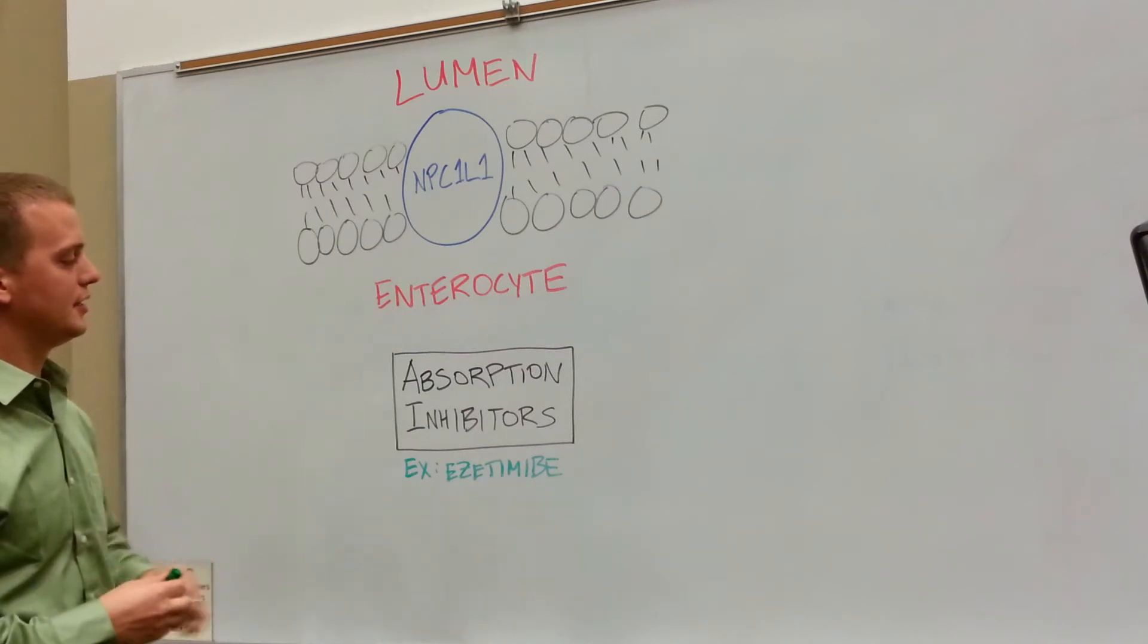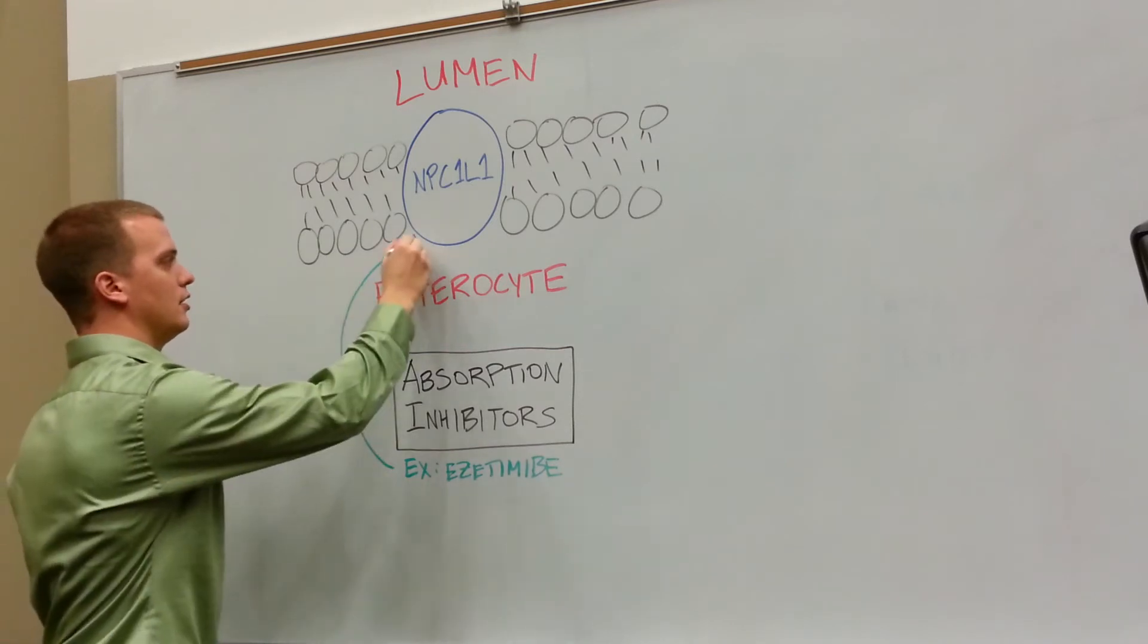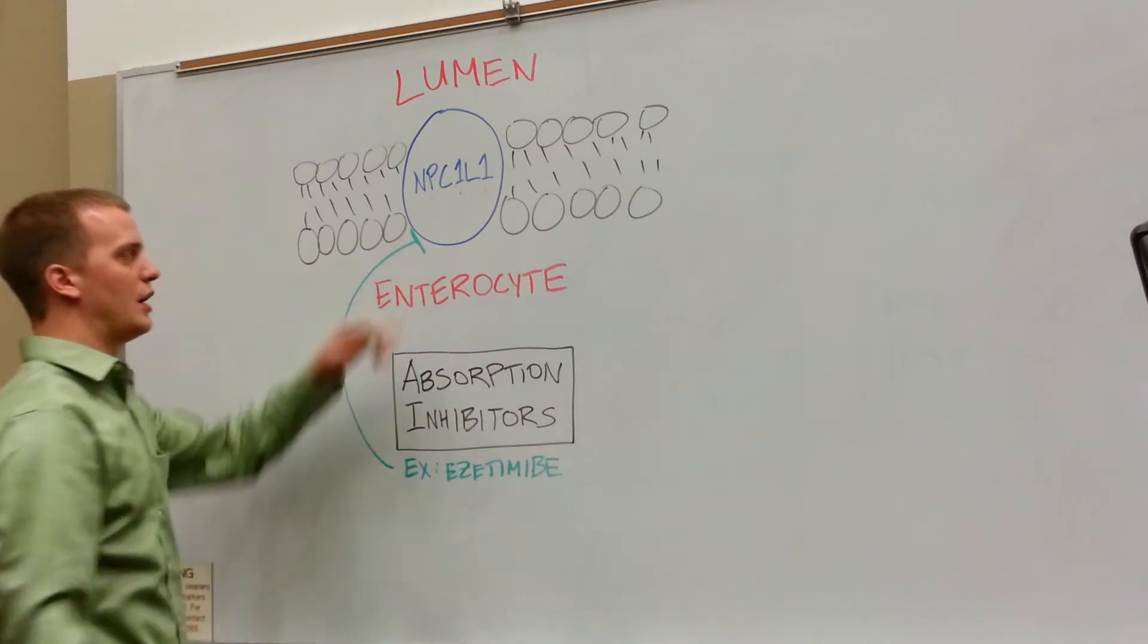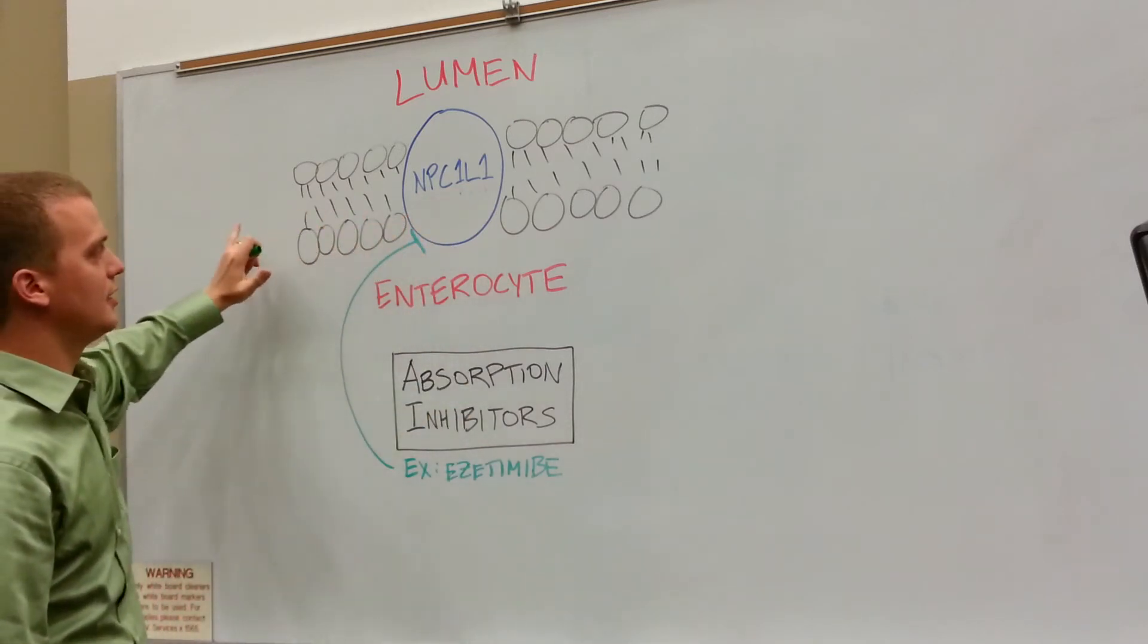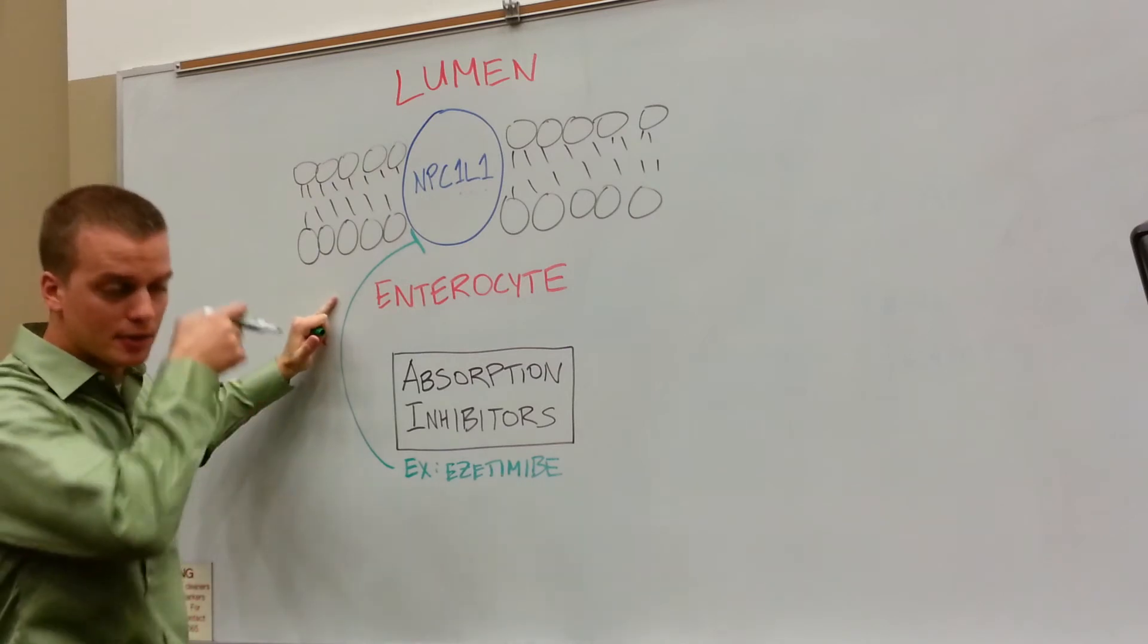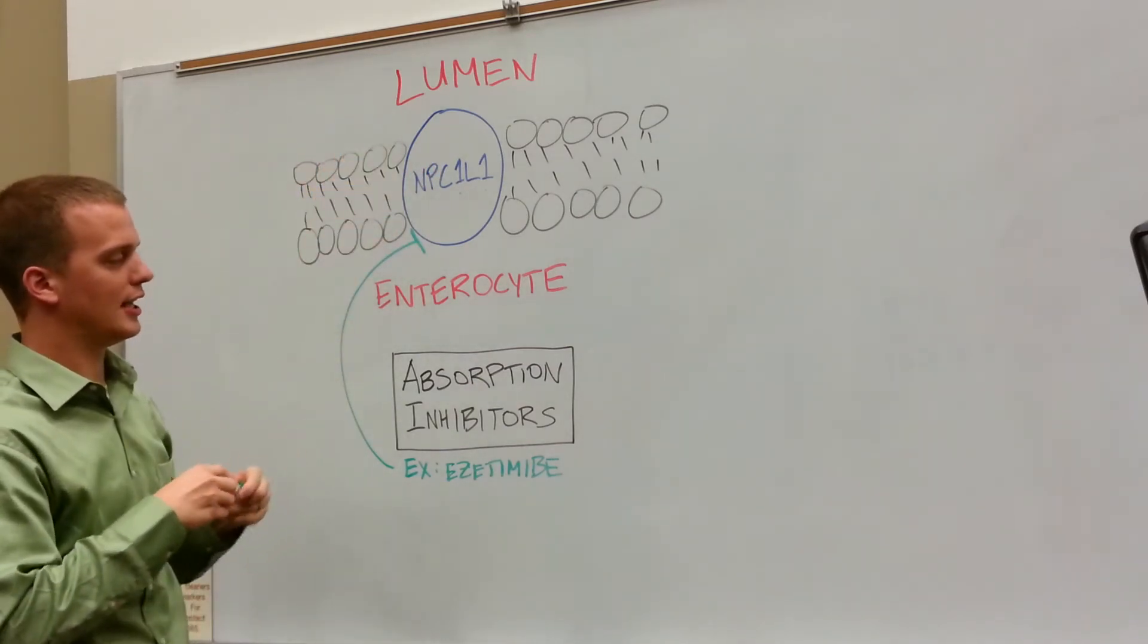The main mechanism here is that ezetimibe is going to block the transporter known as NPC1L1. This transporter is in the phospholipid bilayer of enterocytes—enterocytes are the cells that line the lumen in your intestines.